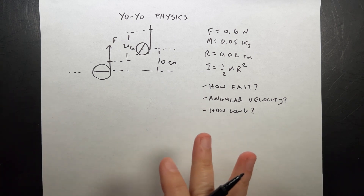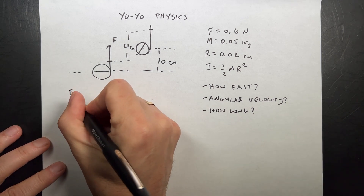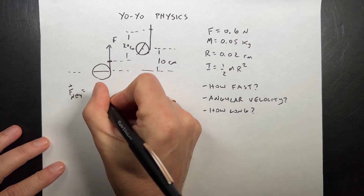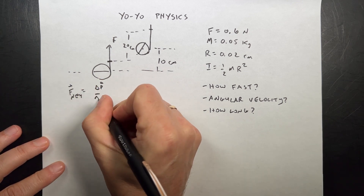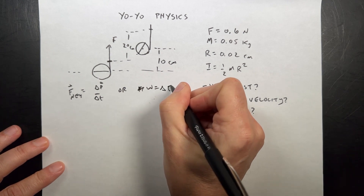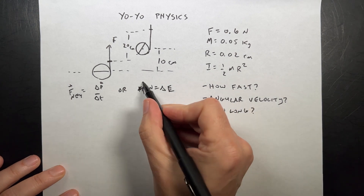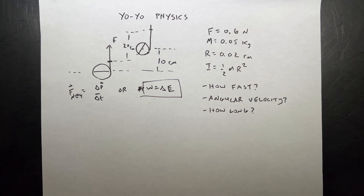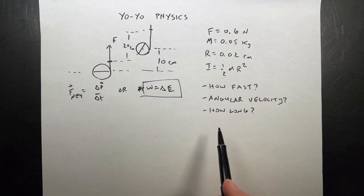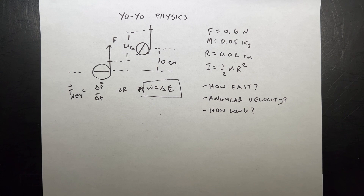So how do we do this? The very first thing you could think of is: should I use F_net equals the change in momentum with respect to time, or work equals the change in energy? In this case, I should use work-energy, because we don't care about direction, and we don't care about time except at the end. But we're given changes in position, so this suggests I need to use the work-energy principle.